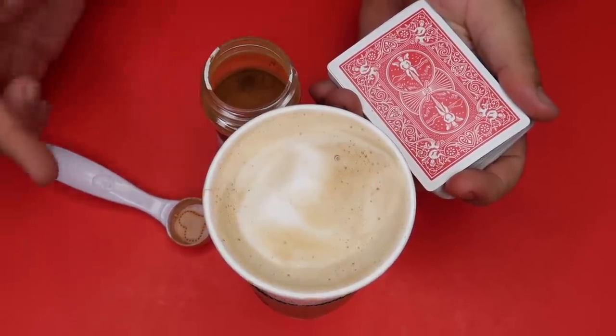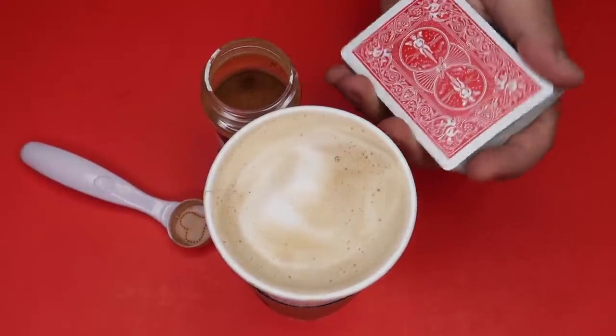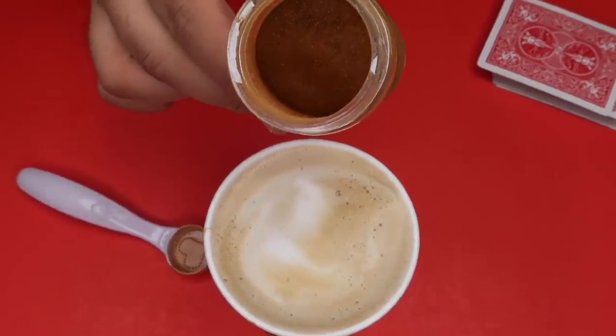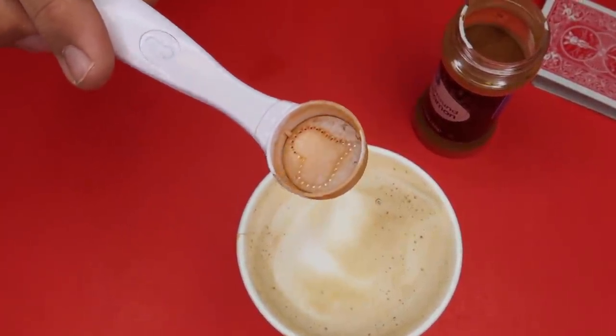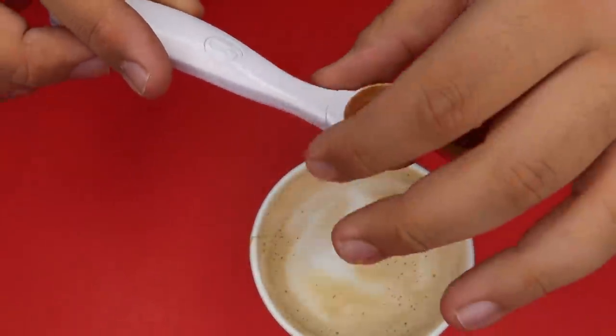Want to know the secret? Here's how it's done. Okay. Here's what you need to pull this one off. You're going to need a latte with foam on top, a deck of cards, some ground cinnamon powder, and this. This is what makes the whole thing possible. This is a latte art spoon. And it's really cool. Let me show you how this works.